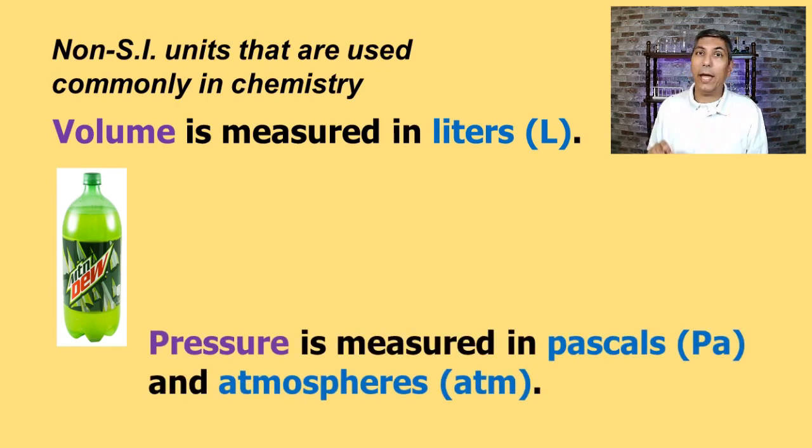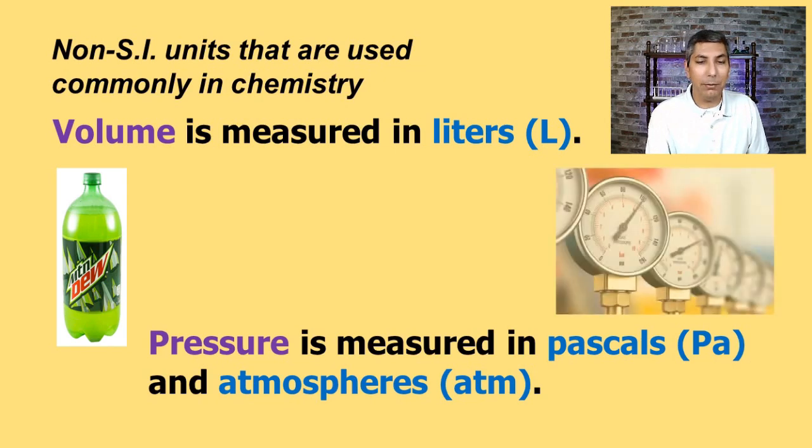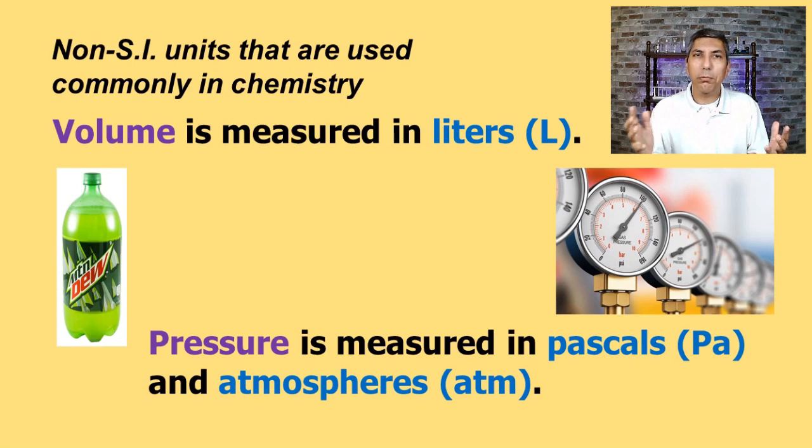Also, we talk about pressure quite a bit. Now, the actual SI unit of pressure is the pascal. But to be honest, a pascal is a very small unit of pressure. So we often use atmospheres. And so one atmosphere of pressure is about the pressure that you're feeling right now if you're sitting somewhere close to sea level. So most of you are probably feeling approximately one atmosphere pressure, maybe a bit above that, maybe a bit below that. But that's normal atmospheric pressure at sea level, one atmosphere.